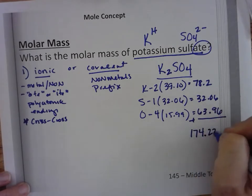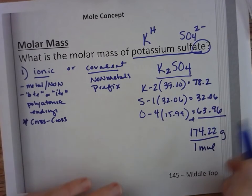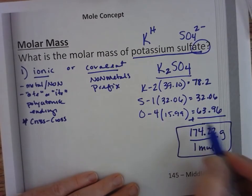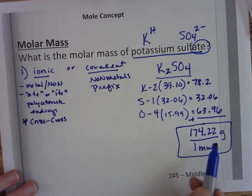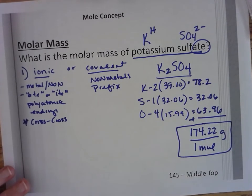And that's grams per one mole. So if I have one mole of potassium sulfate, it would weigh 174.22 grams.